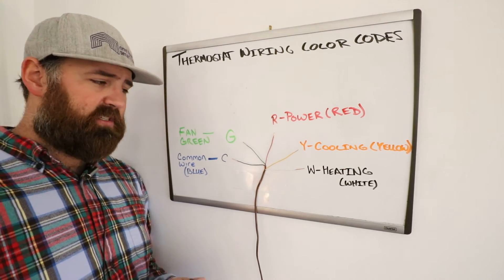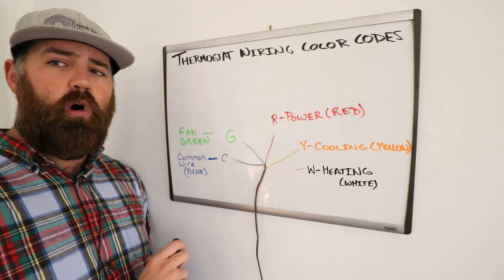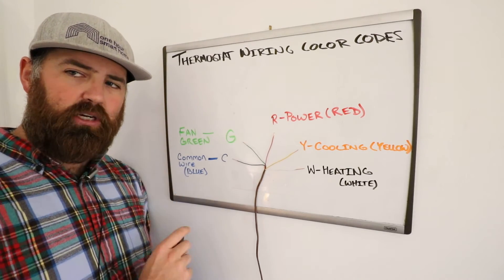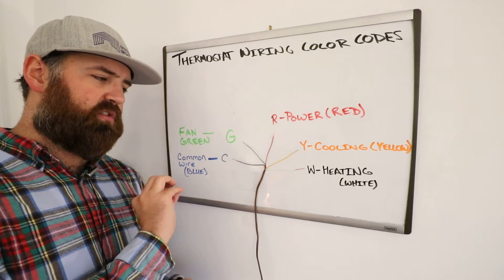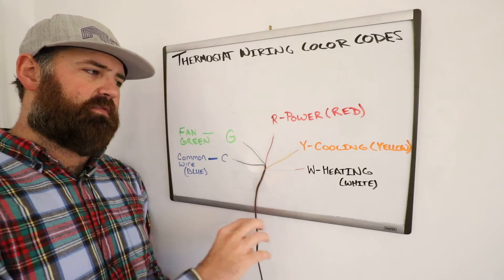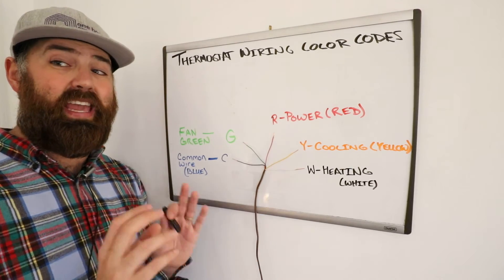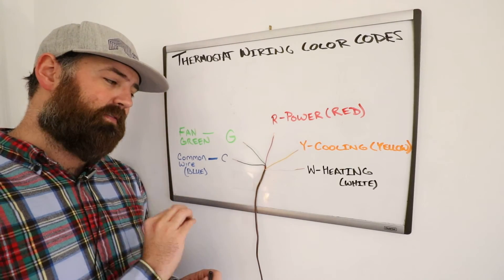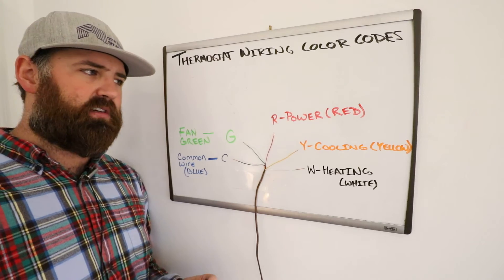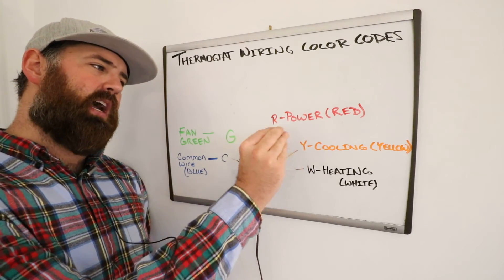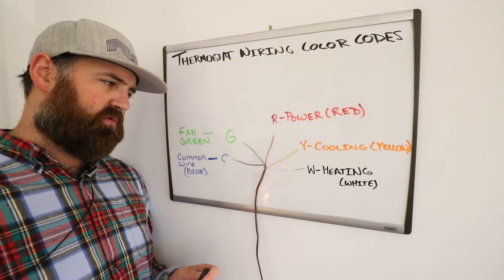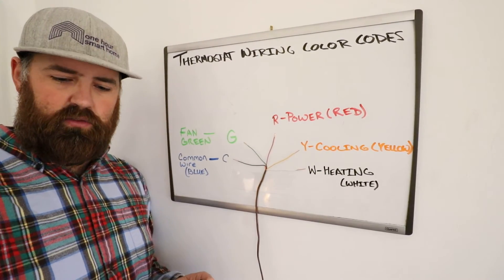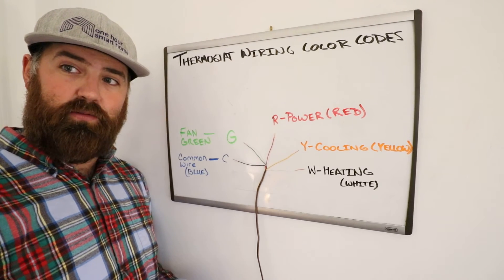The Ecobee thermostat does require a common wire or a common wire adapter in order to work. So, it's a little module you put inside the furnace in order to make a common wire out of a four-wire setup, whereas the Nest can operate on a four-wire setup even without the common wire. And how it does that is by taking teeny tiny little bits of charge from these other wires in your system without activating it. So, just a little bit about how smart thermostats work.